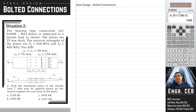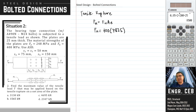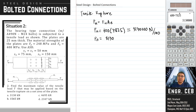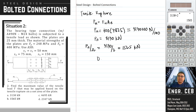We can now compute the nominal strength based on tensile rupture: that is F sub u times A sub e. We have already computed A sub e. F sub u is given as 400 MPa, and A sub e is 7,825 square millimeters. Therefore, the nominal strength is 3,130,000 N, or 3,130 kN. To get the allowable strength, divide by the factor of safety for tensile rupture, which is 2, giving 1,565 kN. Comparing demand T versus capacity, T must be less than 1,565 kN. The answer is letter B.